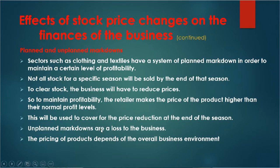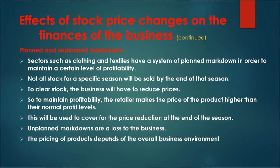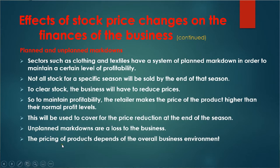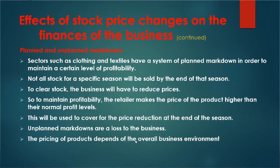Then we also have unplanned markdowns, which are usually a loss to the business. Unplanned markdowns could occur because a product has been damaged or spoiled and you decide to reduce the price. For whatever reason the price is reduced — if it is not planned for, it becomes a loss to the business. The pricing of products depends on the overall business environment. There are a number of factors that must be considered before reducing prices, and some of these factors are uncontrollable — they are beyond the control of the business.